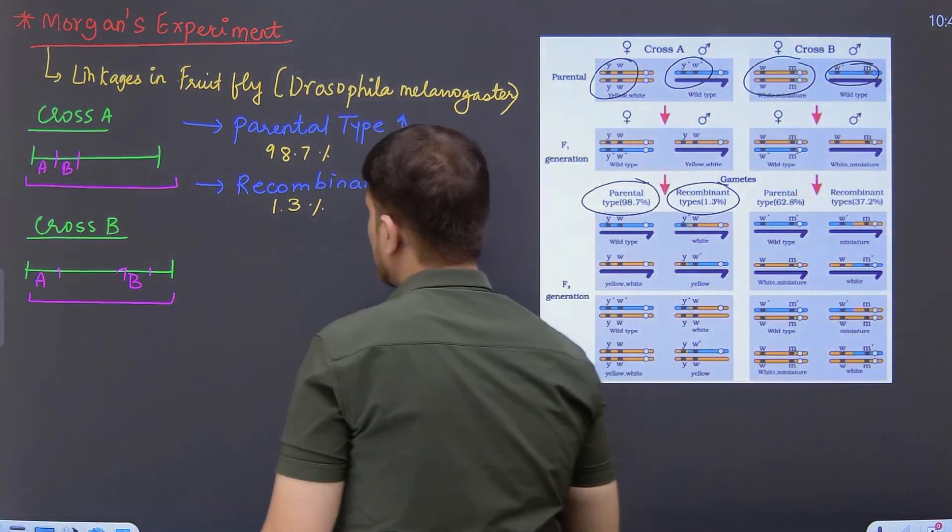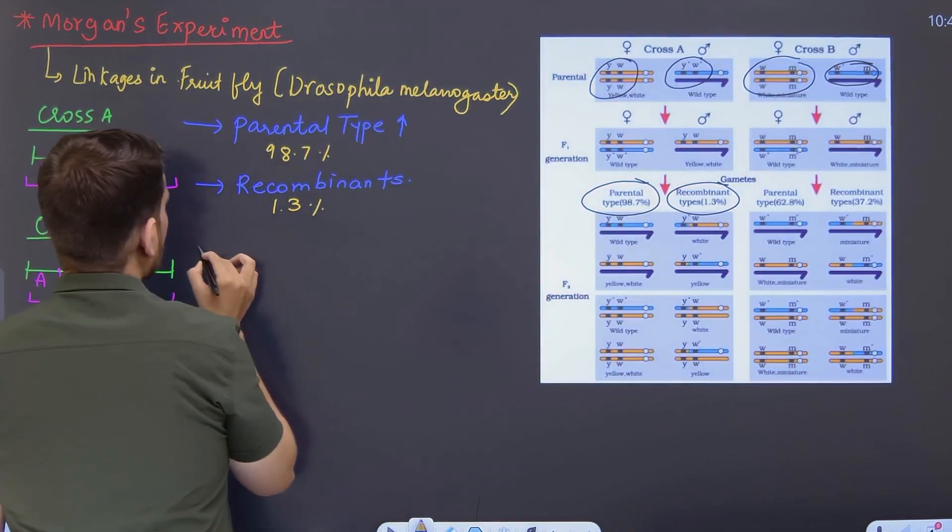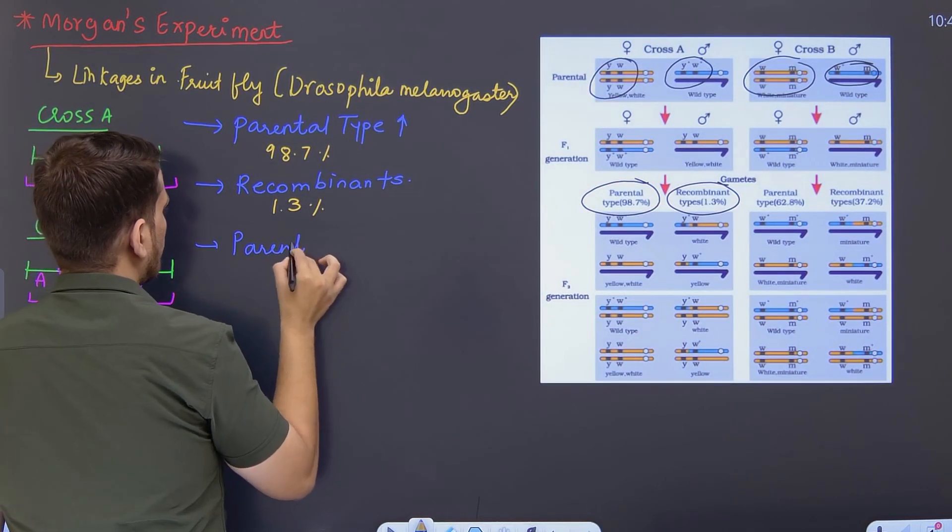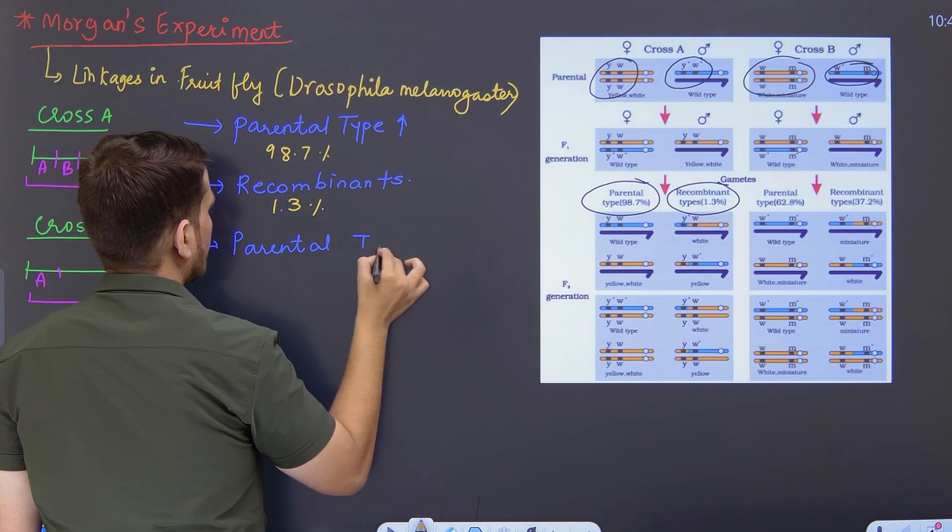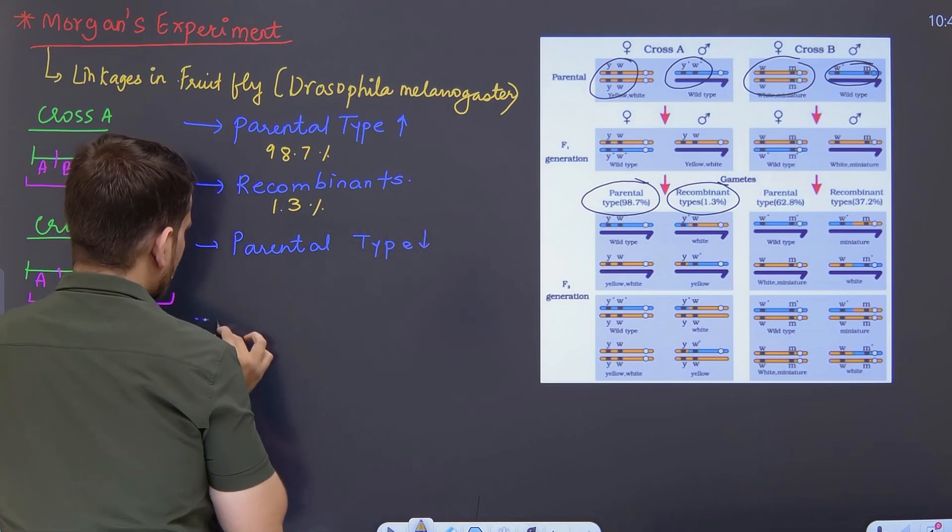When they are far, what would happen? What would happen exactly? Parental combinations will reduce. The parental combinations that are there, they will be reduced. And at the same time, the recombinants that are there...